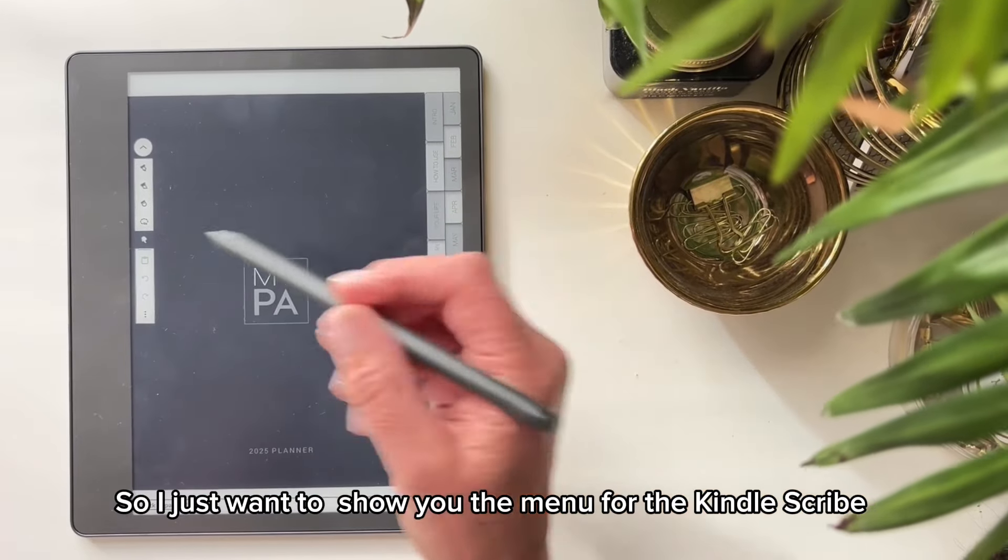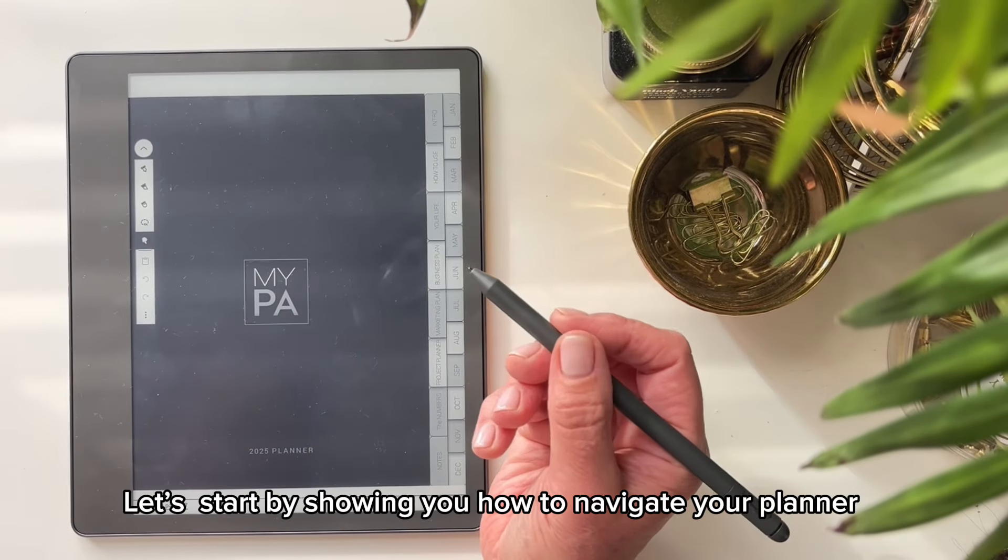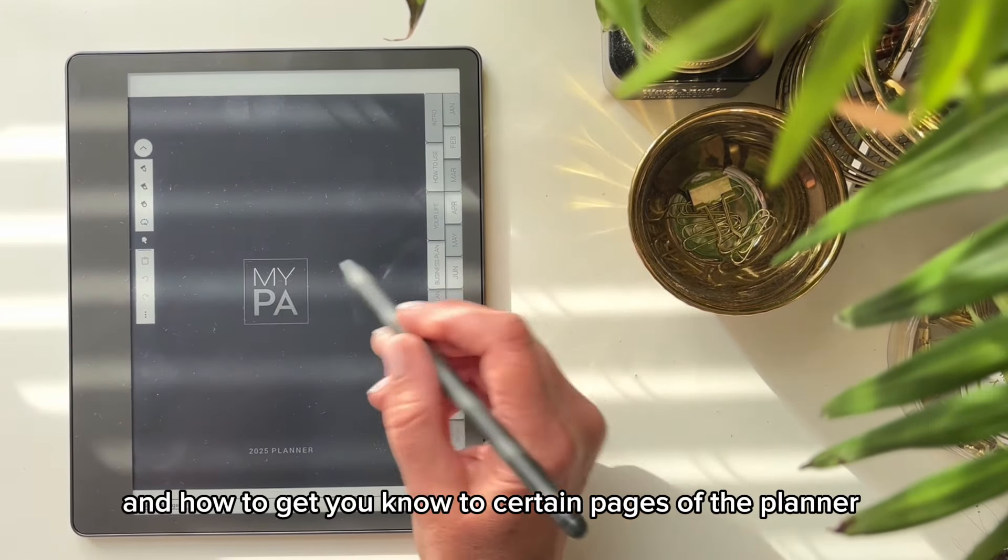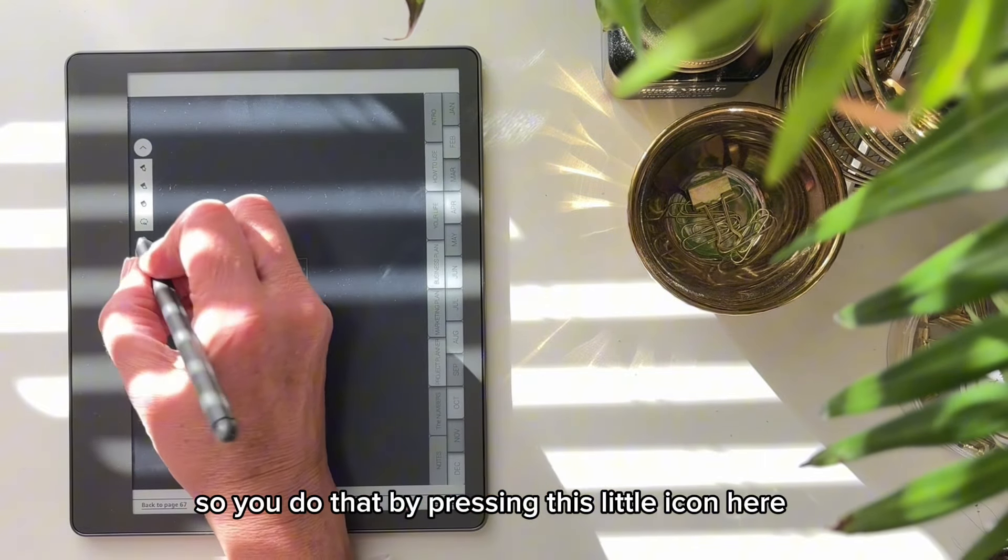So I just want to show you the menu for the Kindle Scribe. Let's start by showing you how to navigate your planner and how to get to certain pages of the planner. So you do that by pressing this little icon here, this little hand icon.